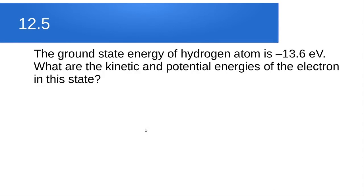Question 12.5: the ground state energy of a hydrogen atom is −13.6 electron volts. What are the kinetic and potential energies of the electron in this state? −13.6 eV is the energy associated with the first Bohr orbit of the atom.